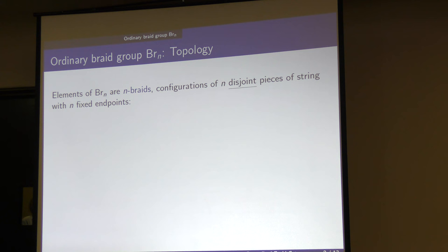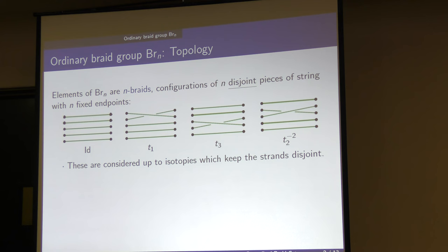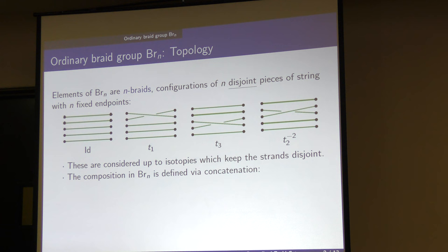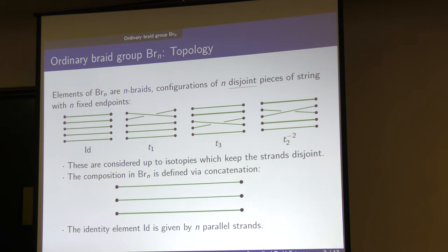The first outlook is that it's a certain topological object. The elements of BR_N are N braids — configurations of N disjoined pieces of string with N fixed endpoints. Here are some examples of elements of BR5. The pieces of string are not allowed to look back. These are considered up to isotopies which keep the strands disjoint, so you can continuously transform them but at no point must two strings touch each other. Composition is defined by concatenation. You have two braids, you stick them together, and then you can use isotopy to smooth it out. In this case we saw that two elements are actually inverse to each other — crossing one way composed with crossing another way gives you the identity element. The identity element is given by N parallel strands.